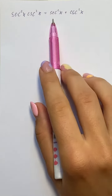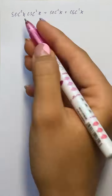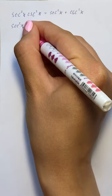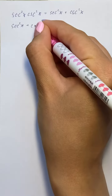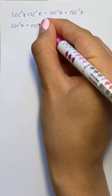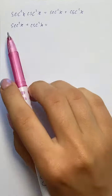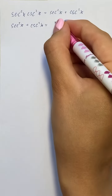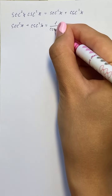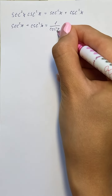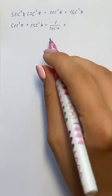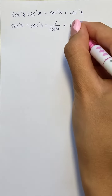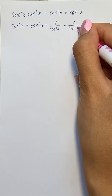We're going to manipulate the right-hand side, which is secant squared of x plus cosecant squared of x. We know that secant squared of x equals one over cosine squared of x, and cosecant squared of x equals one over sine squared of x.